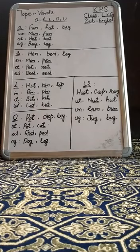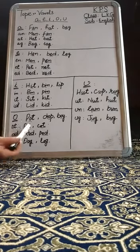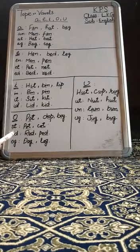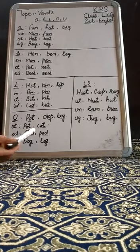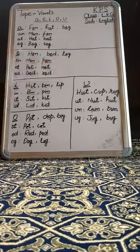Let's see a few combination sounds with the vowel O. First one is -ot. Its examples are Pot and Cot. The second one is -od. Its examples are Rod and Pod. The last one is -og. Its examples are Dog and Log.